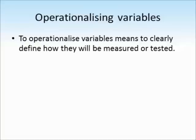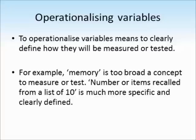The last thing we need to talk about is operationalising variables. To operationalise a variable means clearly stating or defining how that variable is going to be measured or tested. For example, the word 'memory' is far too broad a concept to measure — there are many different types, like memory for word meanings, life events, or procedural tasks like tying shoelaces. So we need to narrow it down: the number of items recalled from a list of 10 is much more specific than just saying somebody will have a better memory for words than pictures.